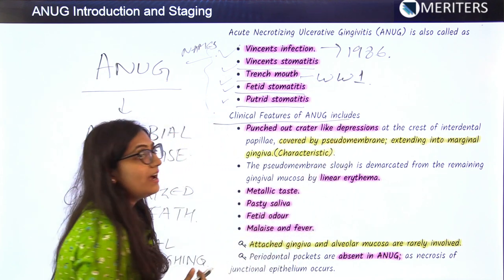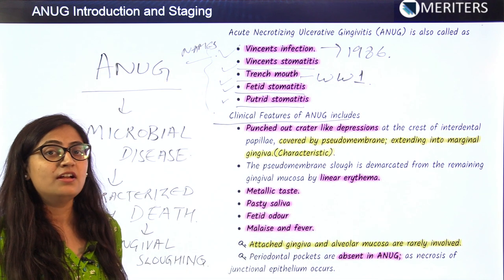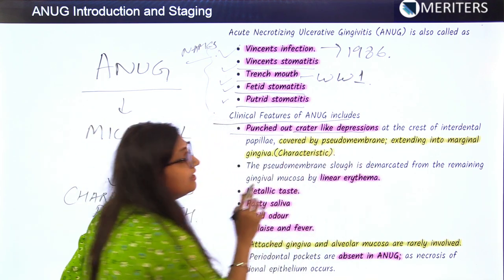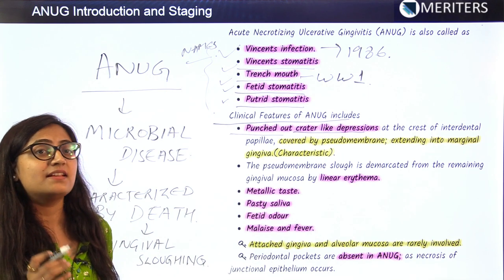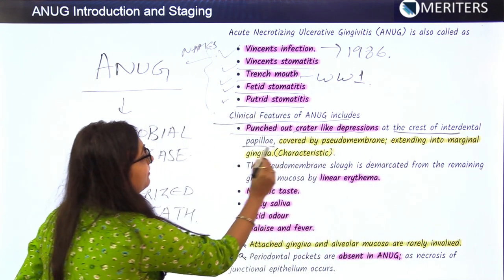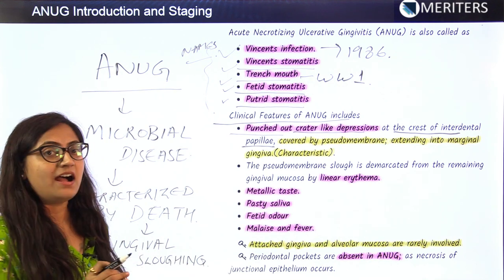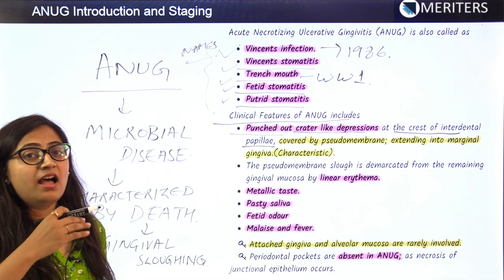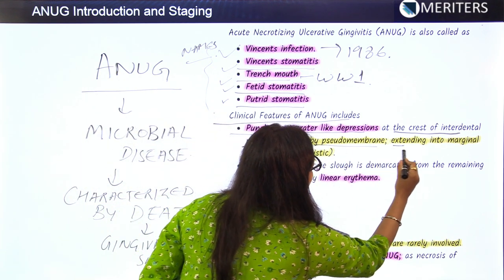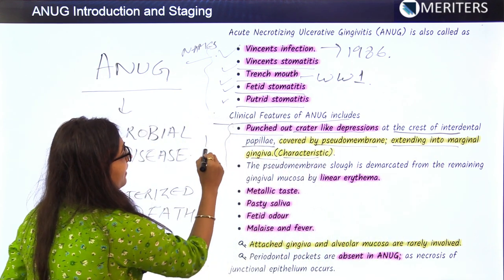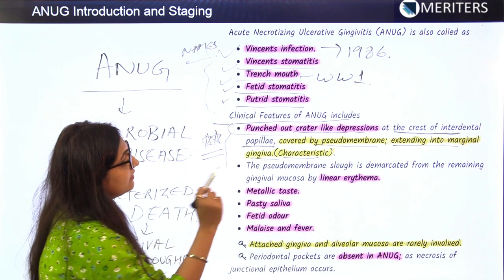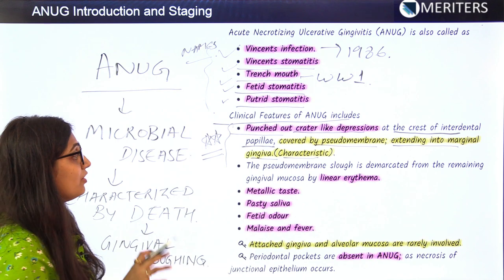The clinical features of ANAG: the main characteristic is the punched-out, crater-like depression. This is a very important term — it is punched out and present at the crest of the interdental papillae. The areas mostly involved are the interdental papillae, followed by marginal gingiva, which are covered by a pseudomembrane extending into the marginal gingiva.